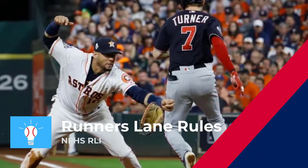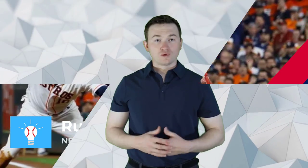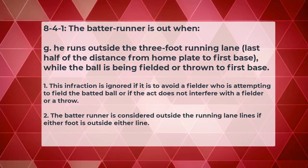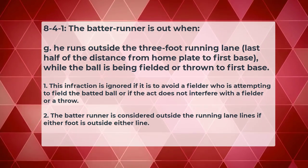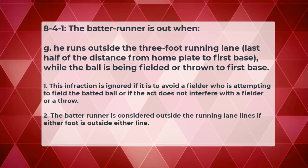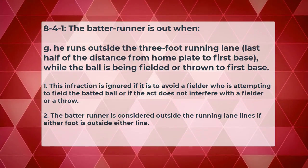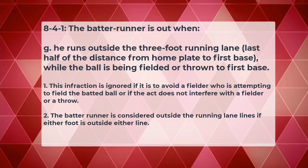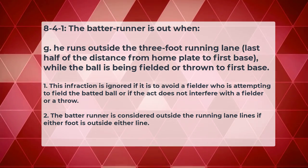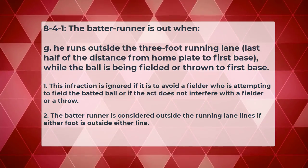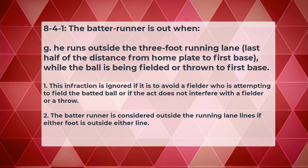To start, let's review the rules that have to do with the runner's lane. We can find this in Rule 8, which covers base running, Section 4, which covers when runners are out. Rule 8-4-1G: the batter runner is out when he runs outside the three-foot running lane, last half of the distance from home plate to first base, while the ball is being fielded or thrown to first base. The infraction is ignored if it is to avoid a fielder who is attempting to field the batted ball, or if the act does not interfere with a fielder or a throw. The batter runner is considered outside the running lane lines if either foot is outside either line.